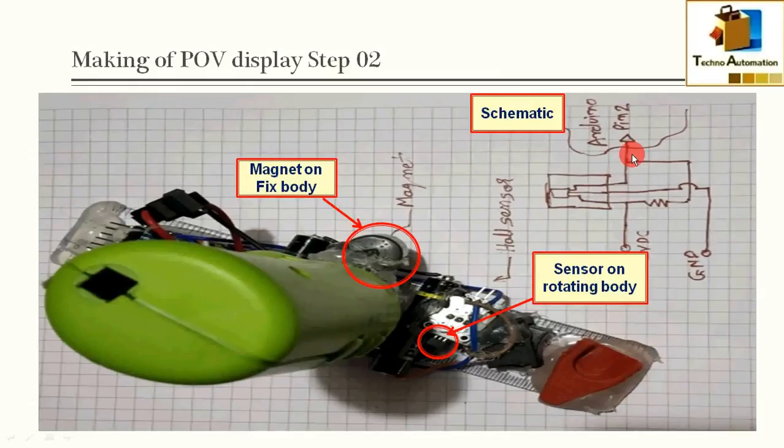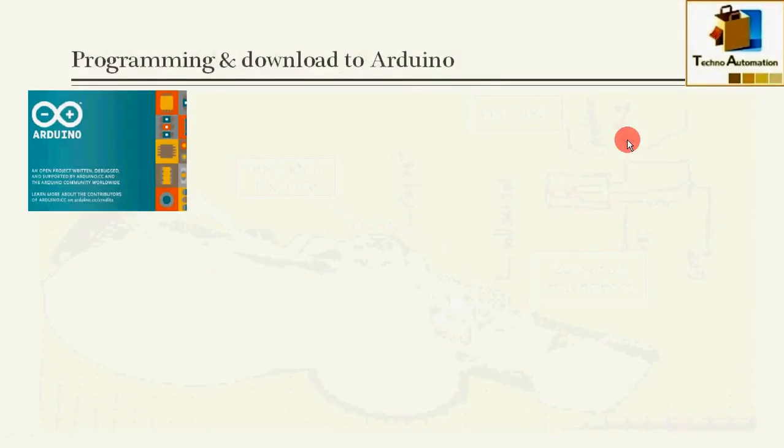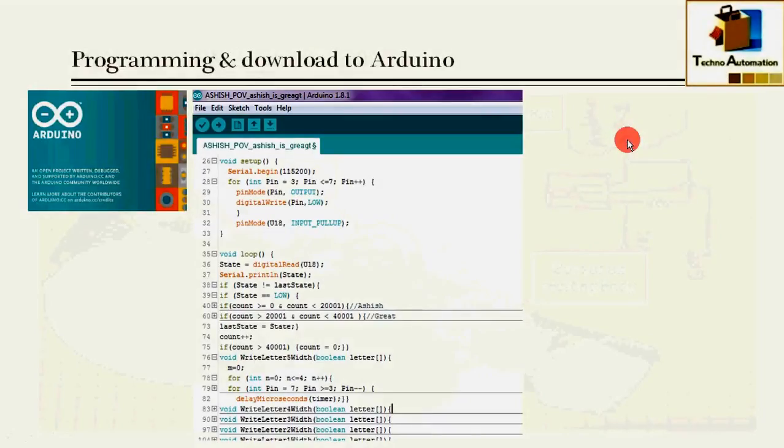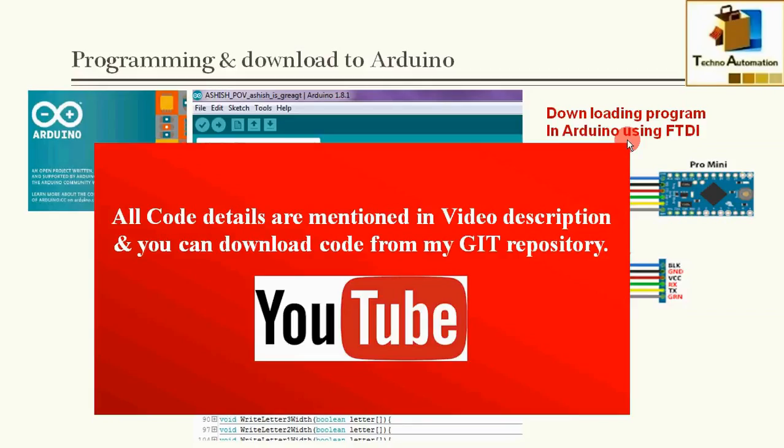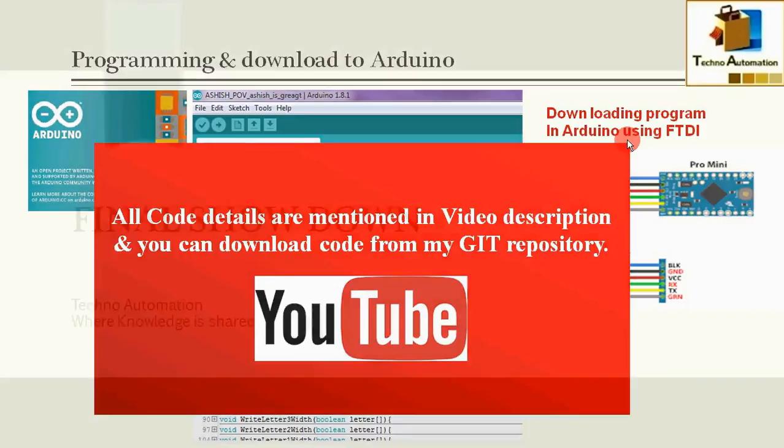Once again, I opened Arduino IDE and changed the program, downloaded the program using FTDI converter. You need not worry about the code because code details are already mentioned in video description and you can download from my Git repository.